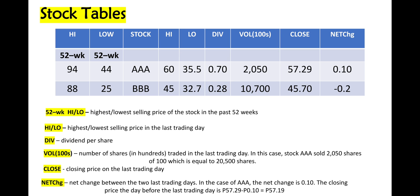We also have the net change between the two last trading days. For example, for AAA, the highest and lowest selling price for the past 52 weeks is: highest is 94 and lowest is 44. The highest selling price in the last trading day is 60, and the lowest price for the last trading day is 35.5. The dividend is 0.70, with a volume by hundreds of 50, and the closing price on the last trading day is 57.29, with a net change between the last trading days of 0.10. That means the closing price for the day before the last trading day is 57.29 less 0.10, which is 57.19.